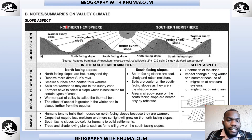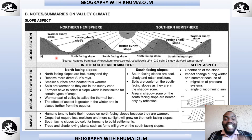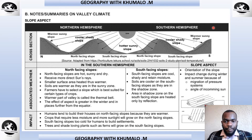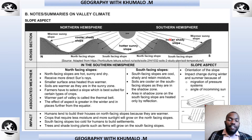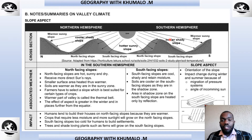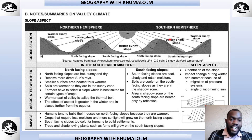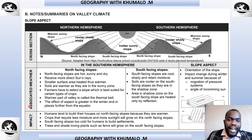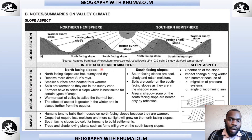Now let's look at slope aspect in more detail. Slope aspect is the direction in which the slope faces in relation to the sun. In the southern hemisphere, the north-facing slopes receive direct sunlight, while in the northern hemisphere, it is the south-facing slopes that receive direct sunlight.